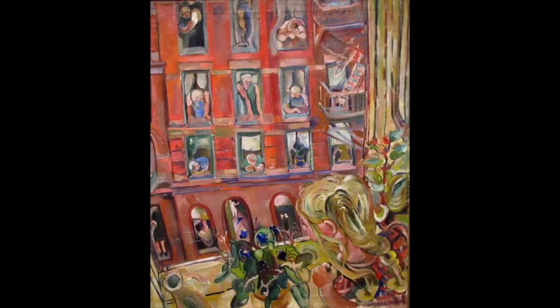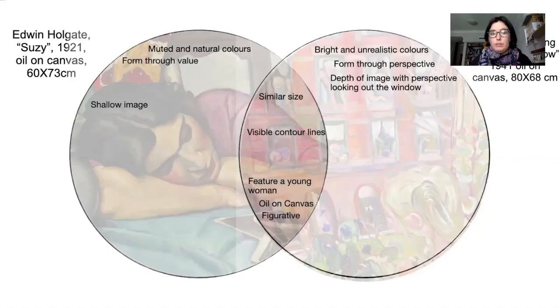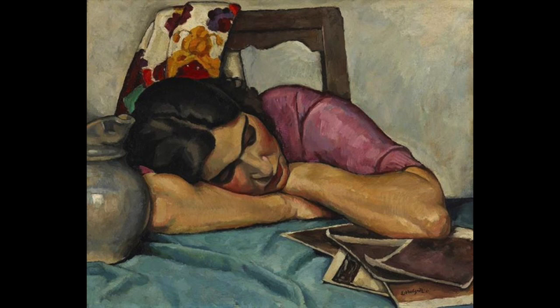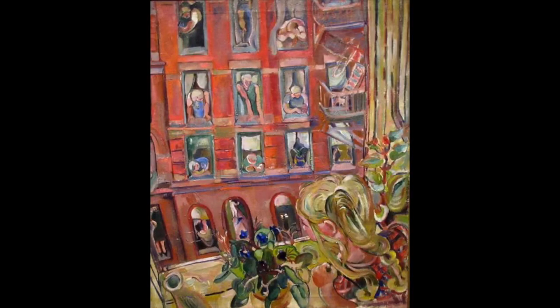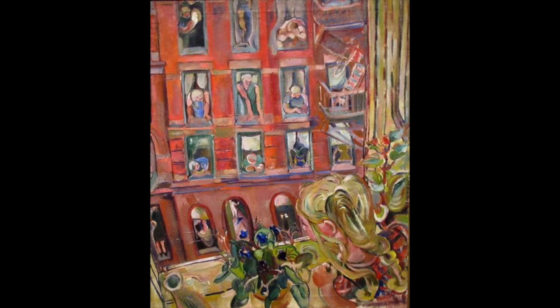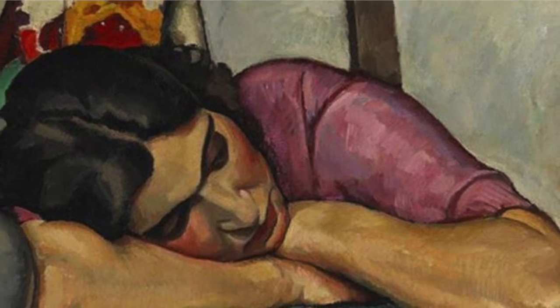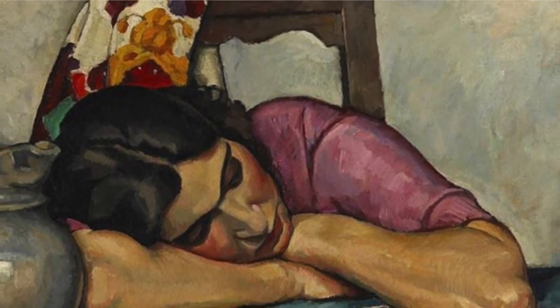There's a depth of image in McCloy's piece because of the perspective — looking out the window you can imagine that the building continues on past the windowsill, giving you the sense that there's a street in between. We are able to fill in those gaps because of perspective, whereas Holgate's is a very shallow image — the wall is almost directly behind the sitter and it's very limited space. McCloy uses a reverse-L composition — the window frame is an L along the outside — whereas Holgate uses a triangular balance, formed by the spread of her arms up to her head and almost up to the chair behind her.